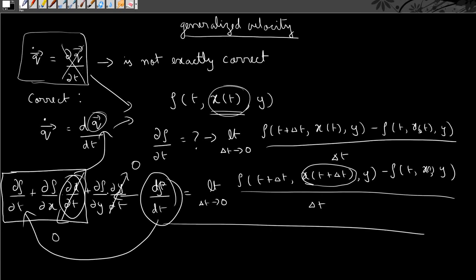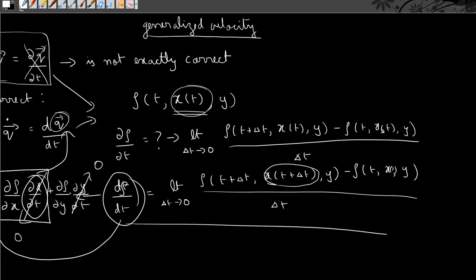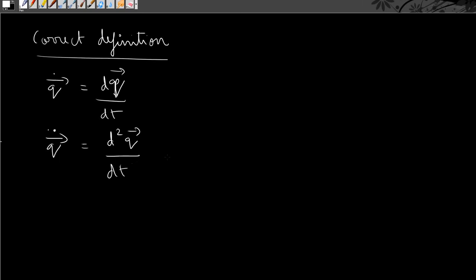So I just wanted to point it out in this video, saying that the correct definition for the generalized velocity is actually the total derivative. The correct definition is as follows: q̇ = dq/dt, and the generalized acceleration in the same manner is the second derivative—the total derivative of generalized coordinate with respect to time.